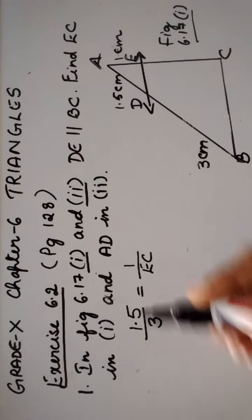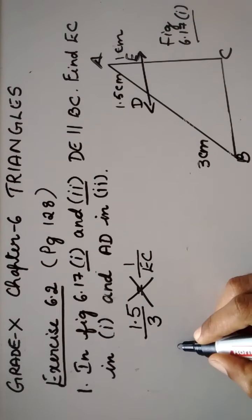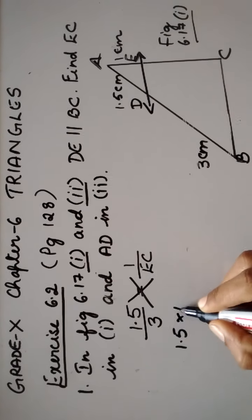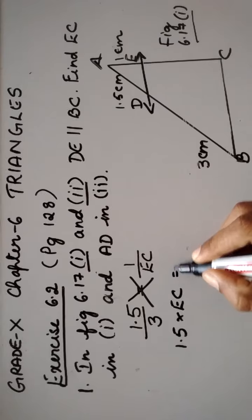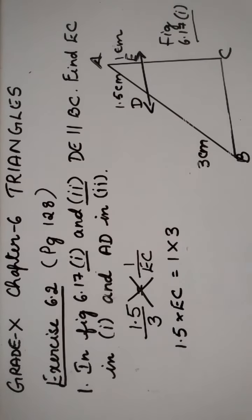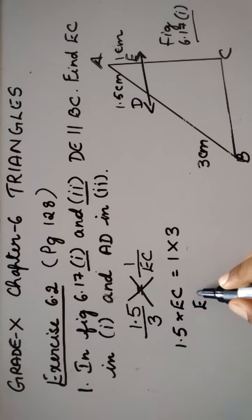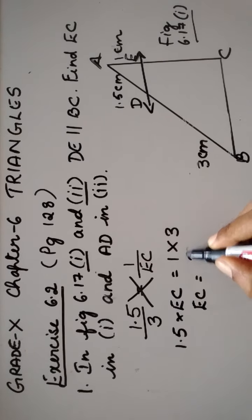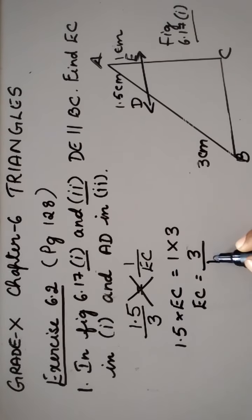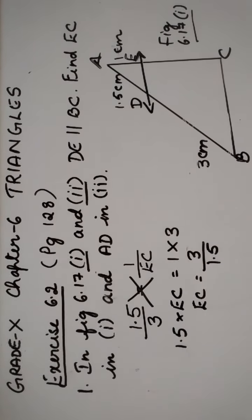So let us cross multiply this one. We get 1.5 into EC is equal to 1 into 3. So EC is equal to 3 divided by 1.5.